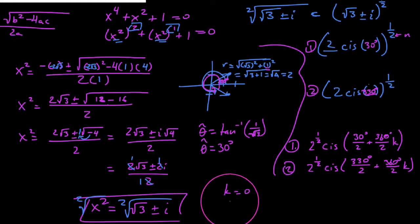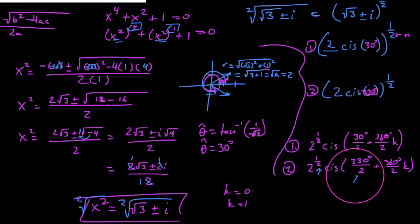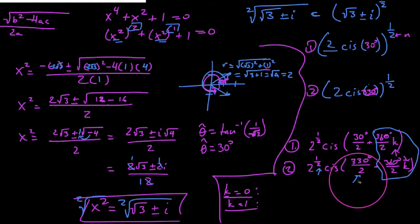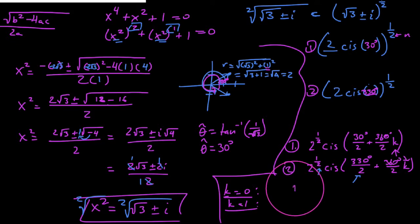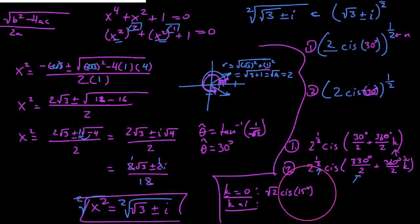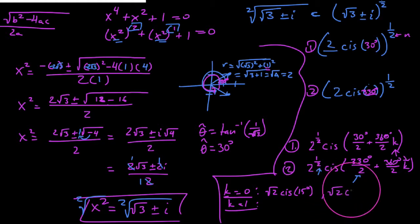For k equals 0, the k-term disappears and you just get the original angles. So for the first case, we get √2·cis(30/2) which is 15 degrees. For the second case when k equals 0, this term drops out and we get √2·cis(330/2) which is 165 degrees. So those are two of our roots when we plug in k equals 0.